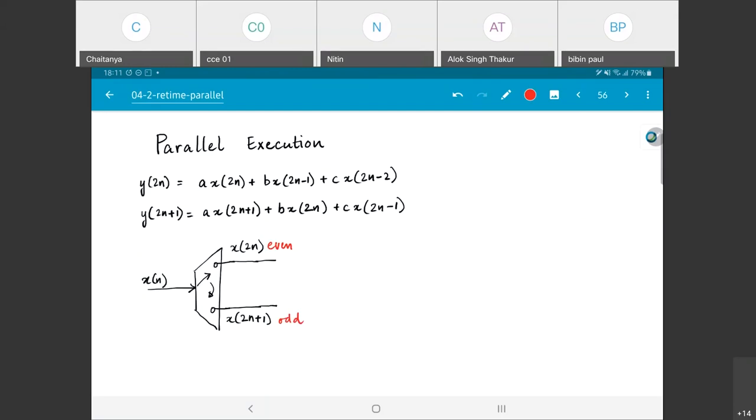Now what is the purpose of this? The way I can look at it is x of 0, x of 2, x of 4, the even values are going to come on x of 2n. x of 1, x of 3, x of 5 are going to come on the lower branch.